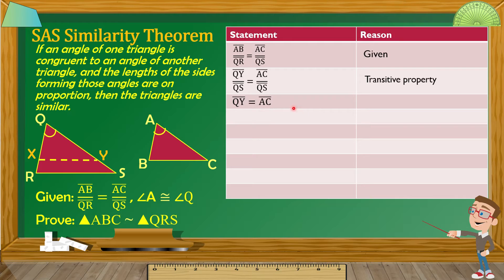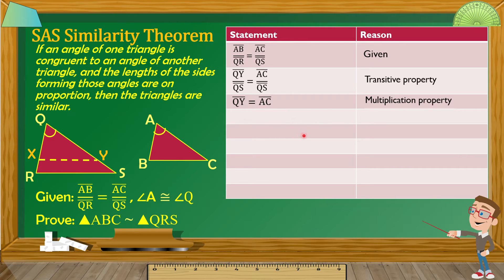Therefore, segment QY is equal to segment AC. The reason is the multiplication property of equality — we multiplied both sides by QS, which cancelled the denominator QS, leaving QY equals AC. Then, segment QY is congruent to segment AC by the definition of congruent segments.